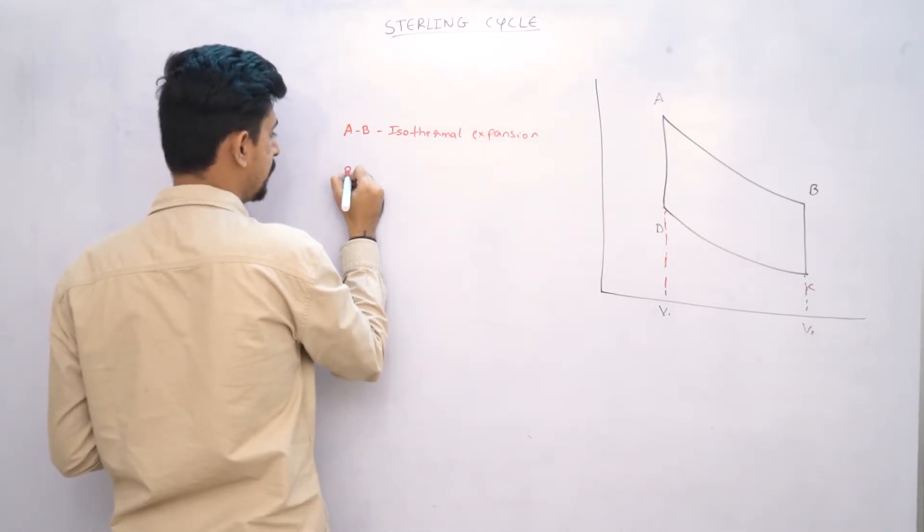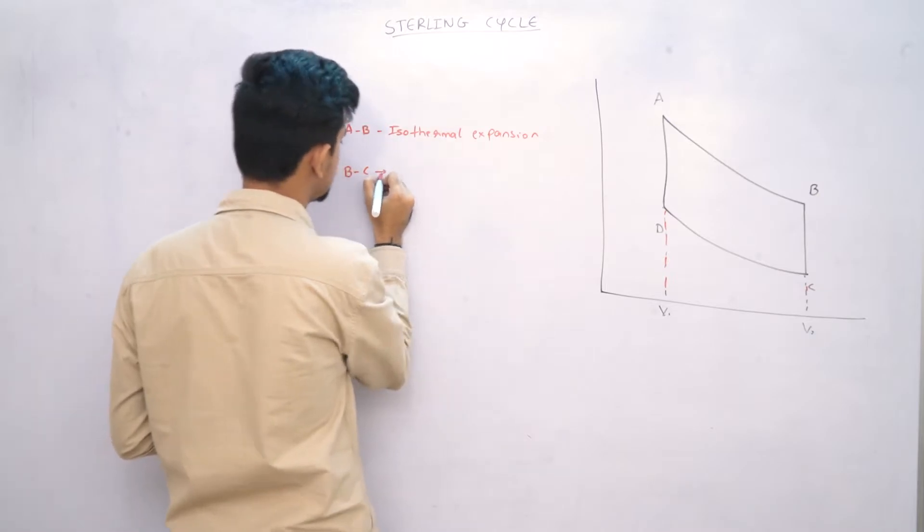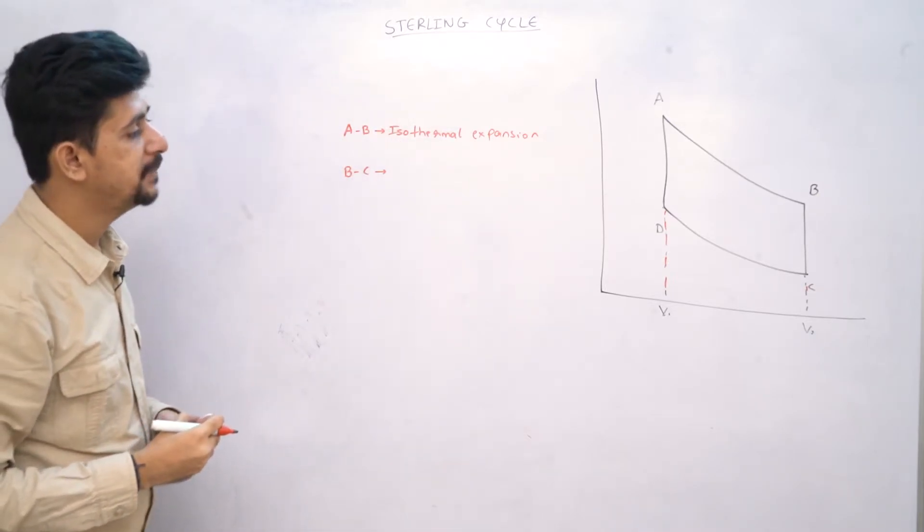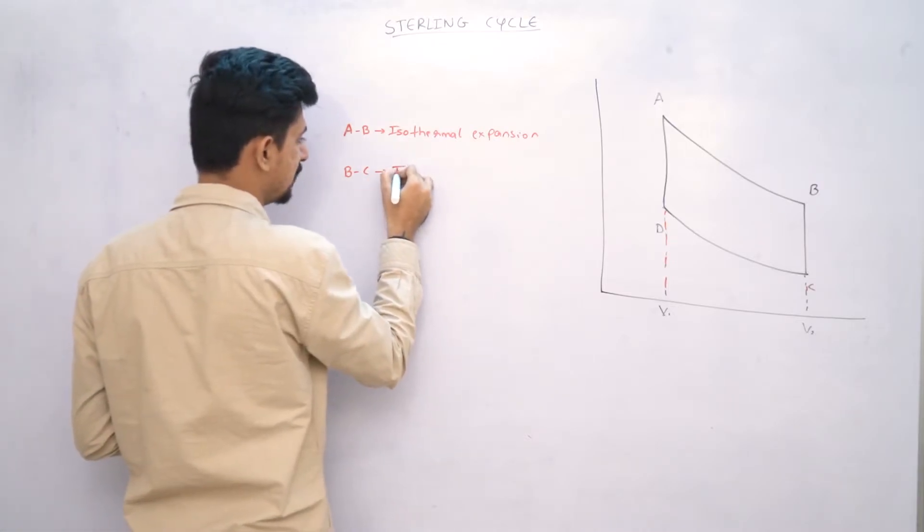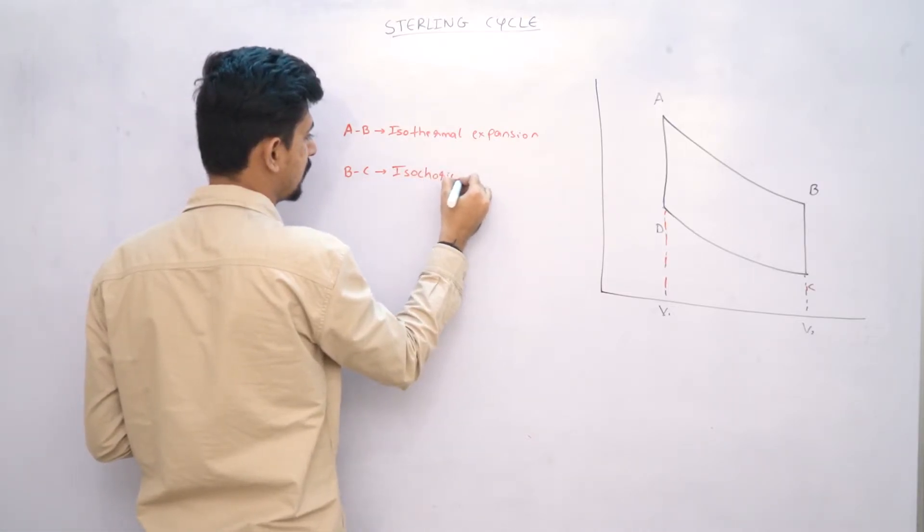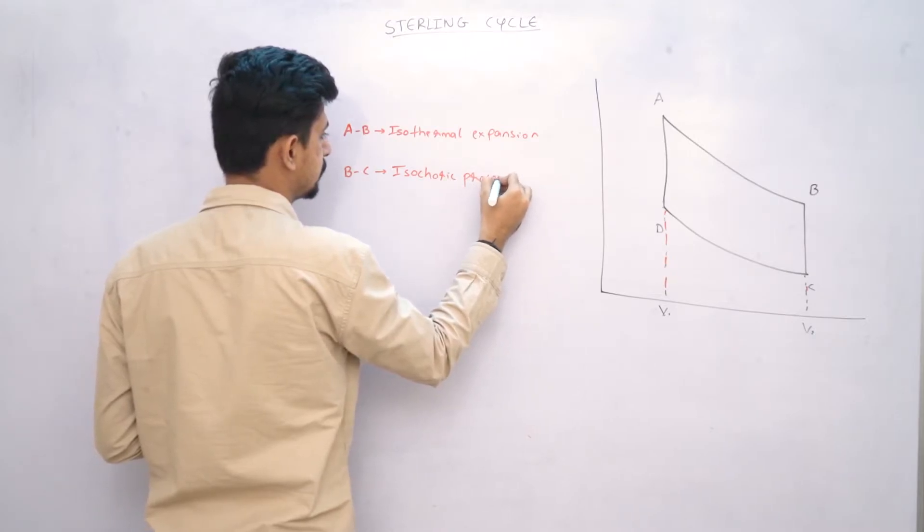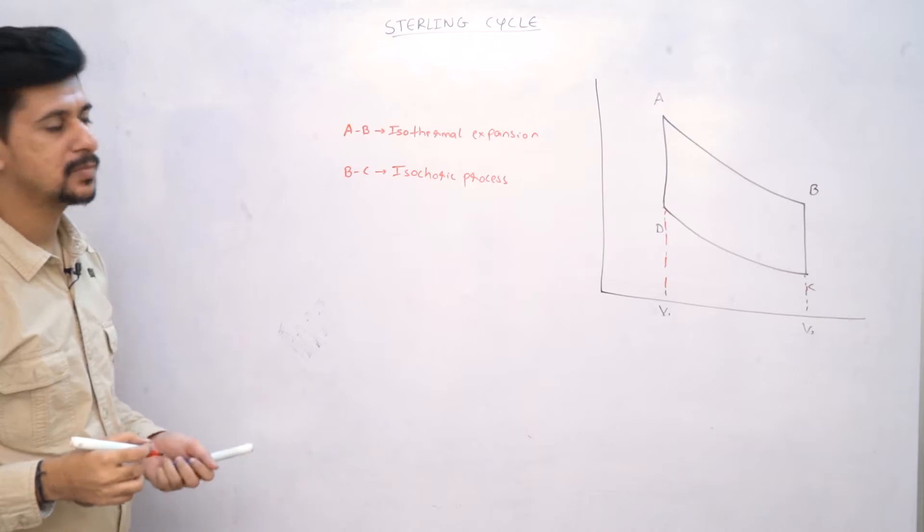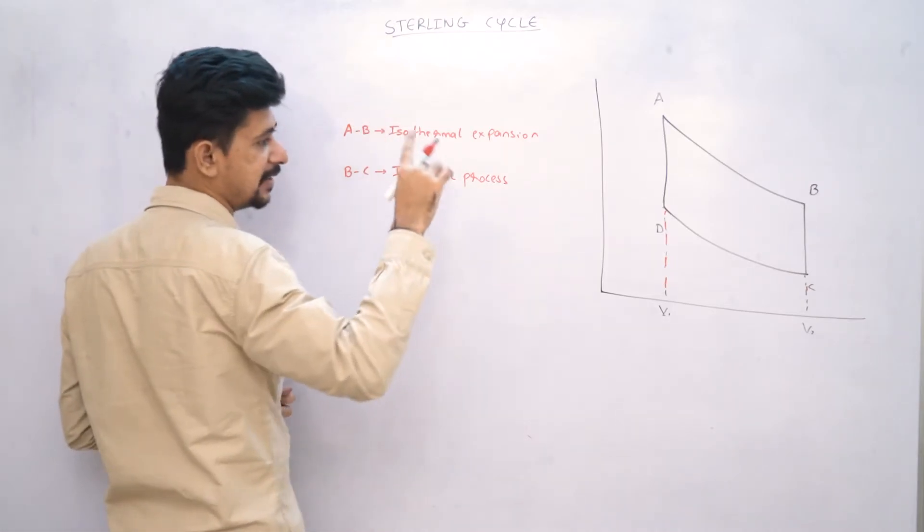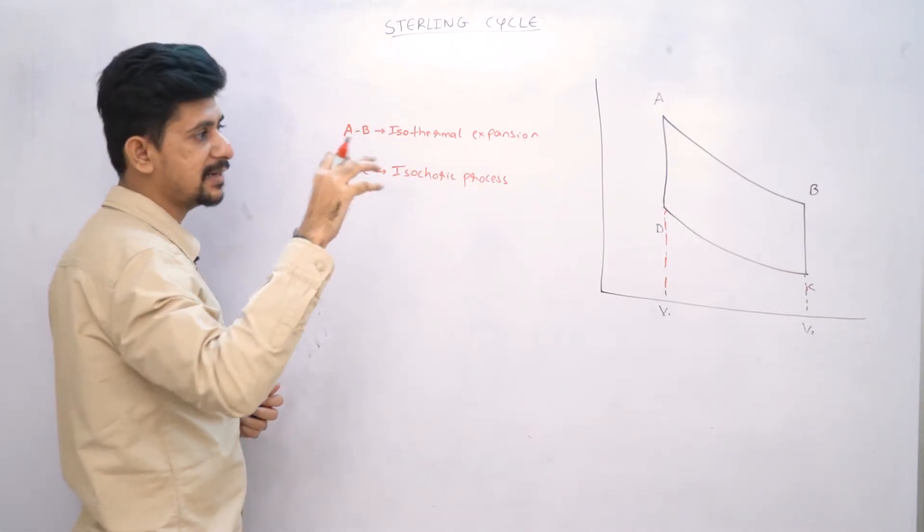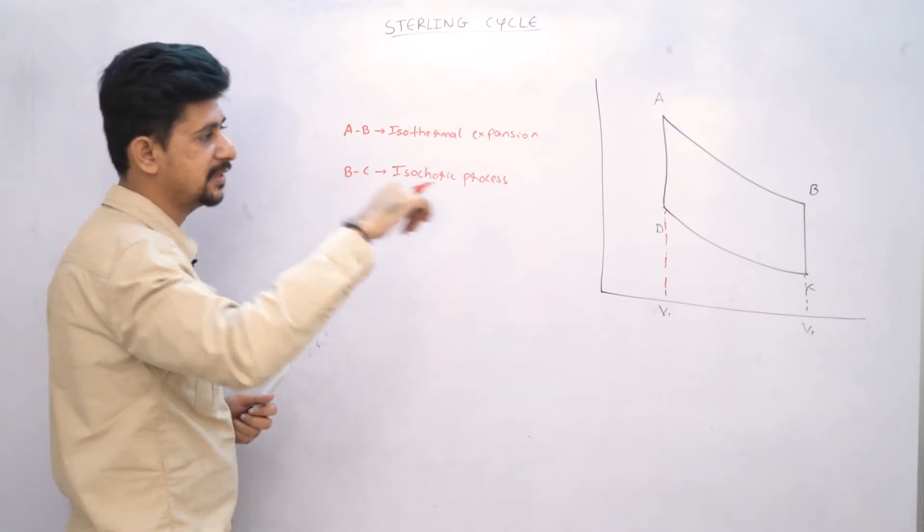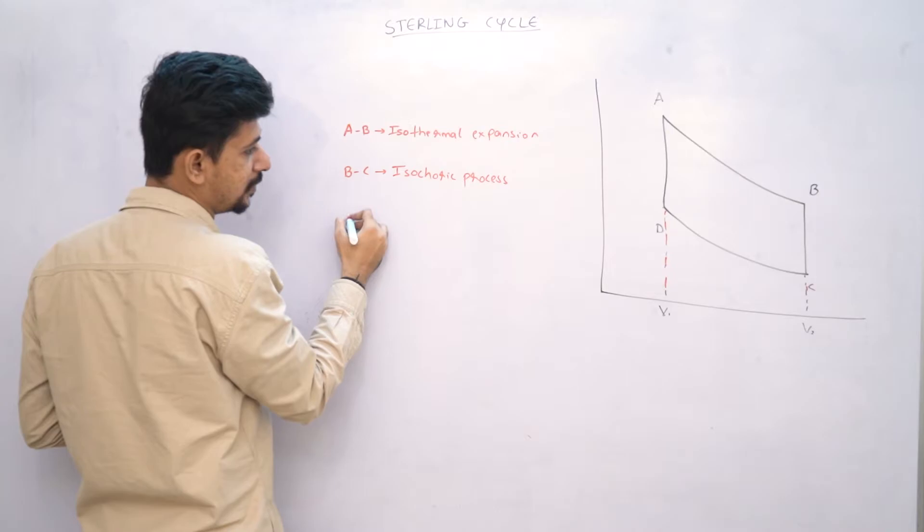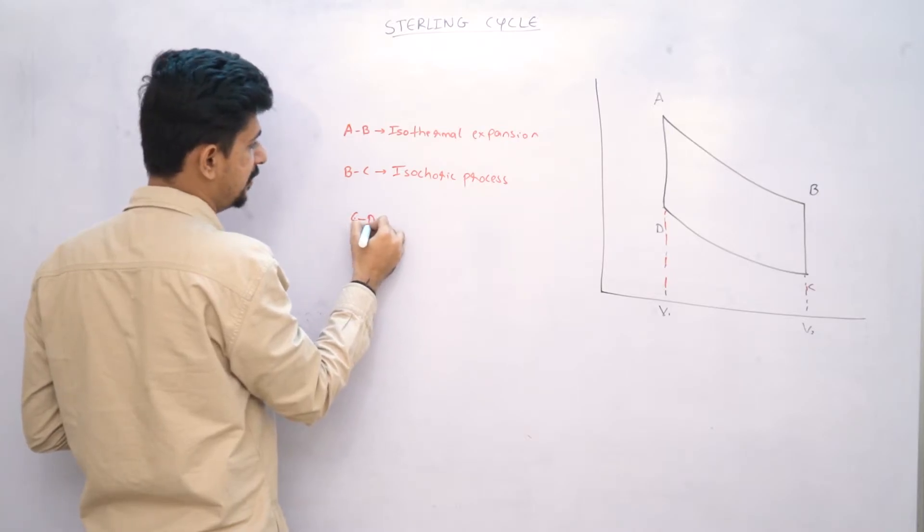Next, from B to C and D to A, this will be an isochoric process. Since there is no change in volume. If you remember, we saw this cycle, but here this will be an isochoric process.